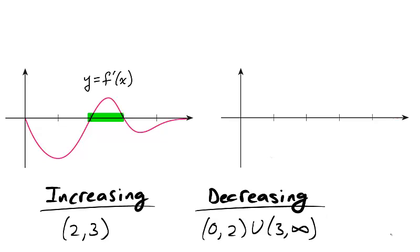As the derivative is positive between 2 and 3, the function is increasing on that interval. As the derivative is negative between 0 and 2, and then again after 3, the function is decreasing on these intervals.